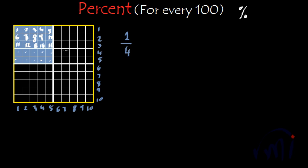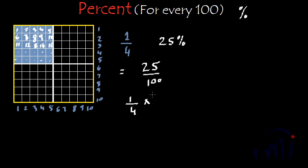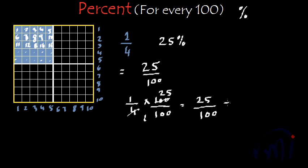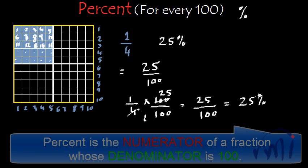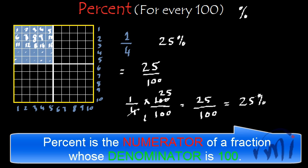So you are actually eating 25 parts of this chocolate when it is divided into hundred parts. That means you are eating 25% of this chocolate. The portion you are eating can be written as the fraction 25 by 100. Or if you take the original fraction 1 by 4 and multiply both numerator and denominator — 4 times 25 gives 100 — this gives you 25 by 100, which is the equivalent fraction of 1 by 4. So 25 by 100 is nothing but 25 percent. In other words, the percent is the numerator of a fraction whose denominator is 100.